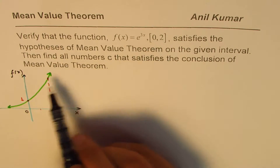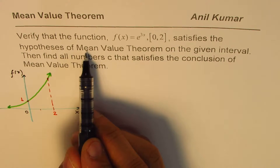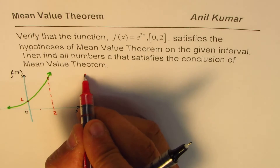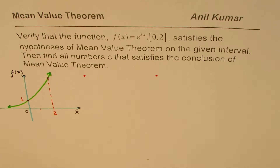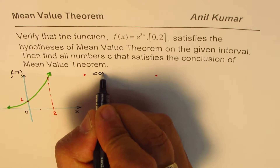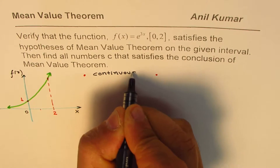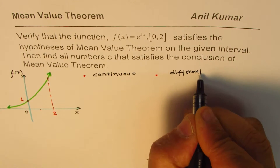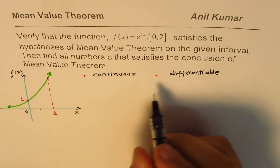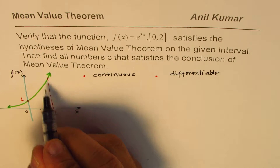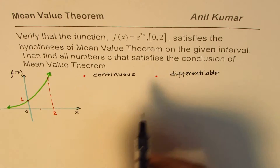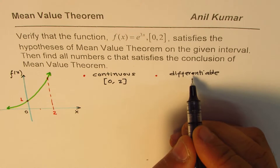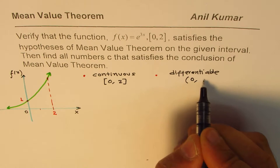Now we have to show that this function satisfies the hypothesis of the mean value theorem. The mean value theorem has two hypotheses: one is that the function should be continuous, and the other is that it should be differentiable. Exponential functions are continuous on their entire domain and are also differentiable. So this function is continuous on [0, 2] and differentiable on the open interval (0, 2).